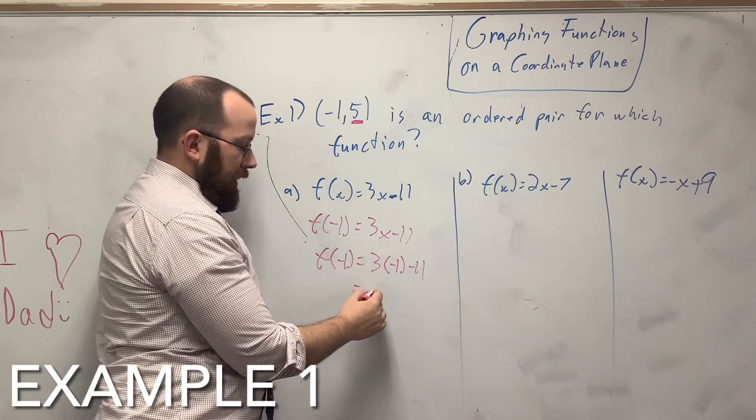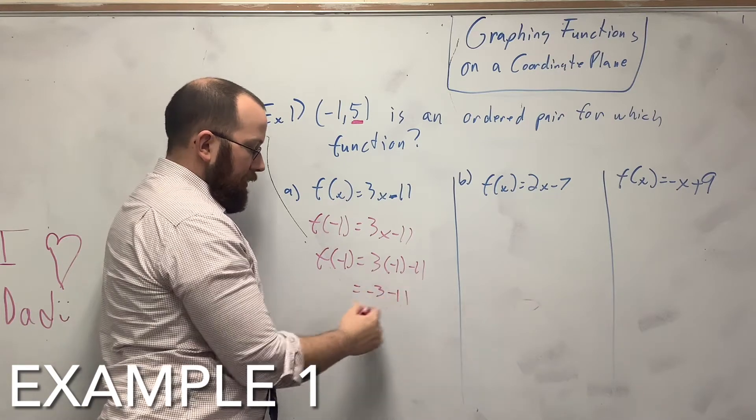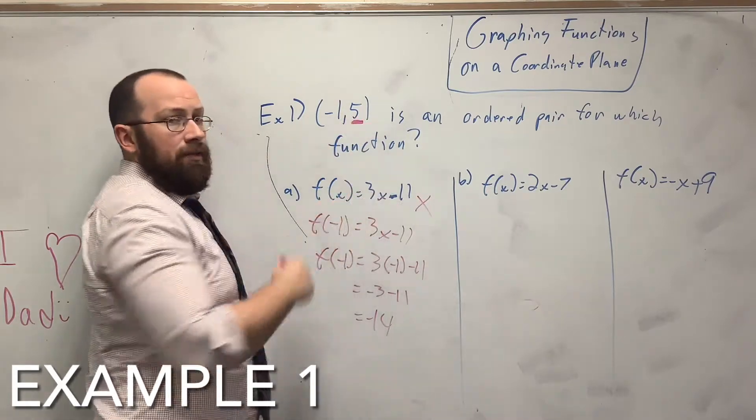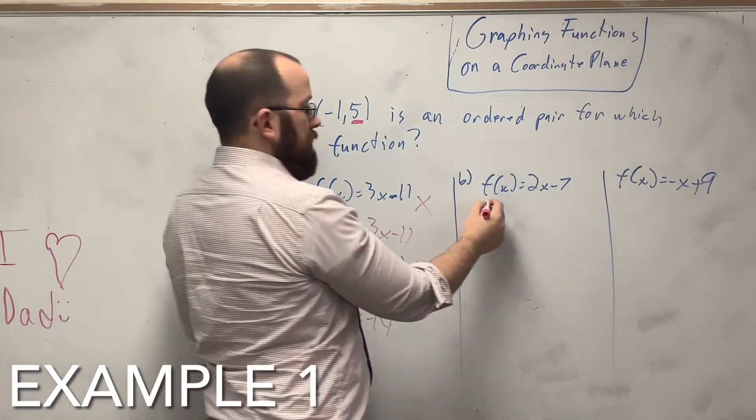And I get negative 3 minus 11, which is negative 14. So this ordered pair is not for this function. Now I come over to this one.